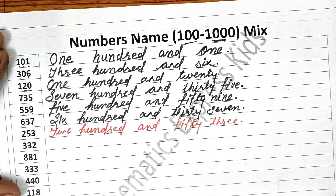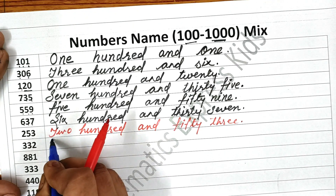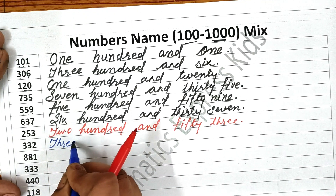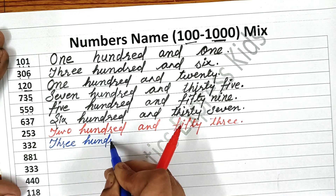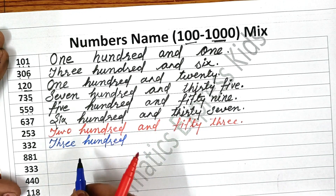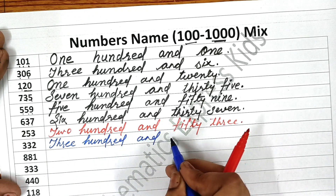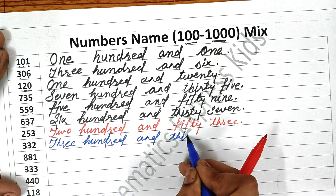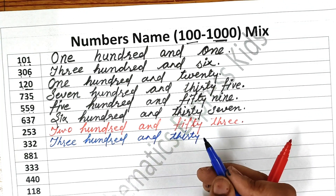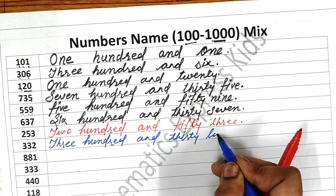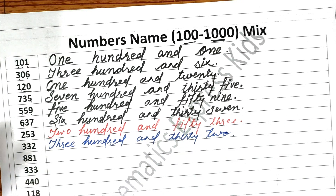Now the next one is three hundred and thirty-two. Write three — T-H-R-E-E — three hundred — H-U-N-D-R-E-D — okay. Three hundred and thirty-two: thirty — T-H-I-R-T-Y — thirty — T-H-I-R-T-Y — and then two. Okay, three hundred and thirty-two.